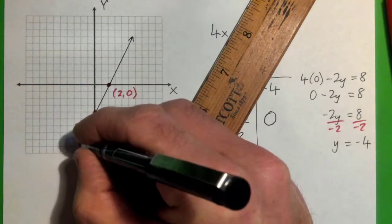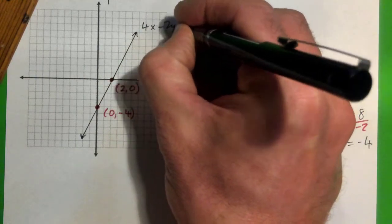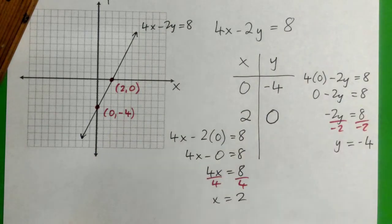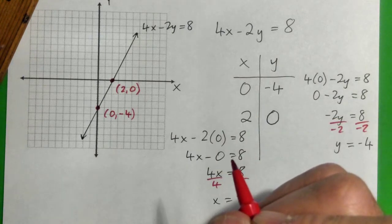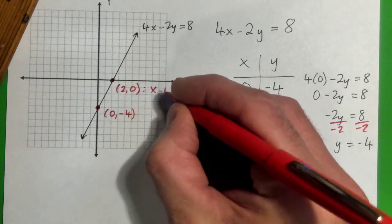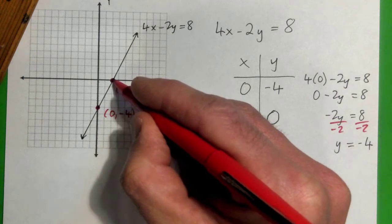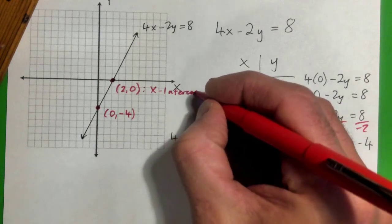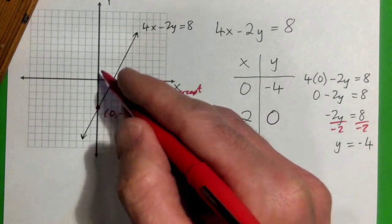And so that's the equation of the line 4x minus 2y equals 8. Now, one of these points is called the x-intercept, and one of them is called the y-intercept. Which is which? The 2 is the x-intercept. The negative 4 is the y-intercept. This point here is the x-intercept because it's where the line intercepts or touches the x-axis. This point is called the y-intercept because it's where the line intercepts or touches the y-axis.